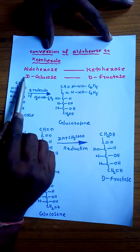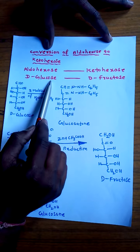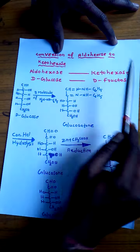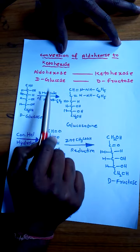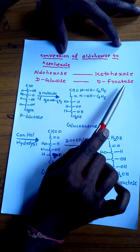Generally D-glucose is taken as the example for aldohexose and D-fructose is taken as the example for ketohexose. So that means here we will learn how to convert D-glucose into D-fructose.